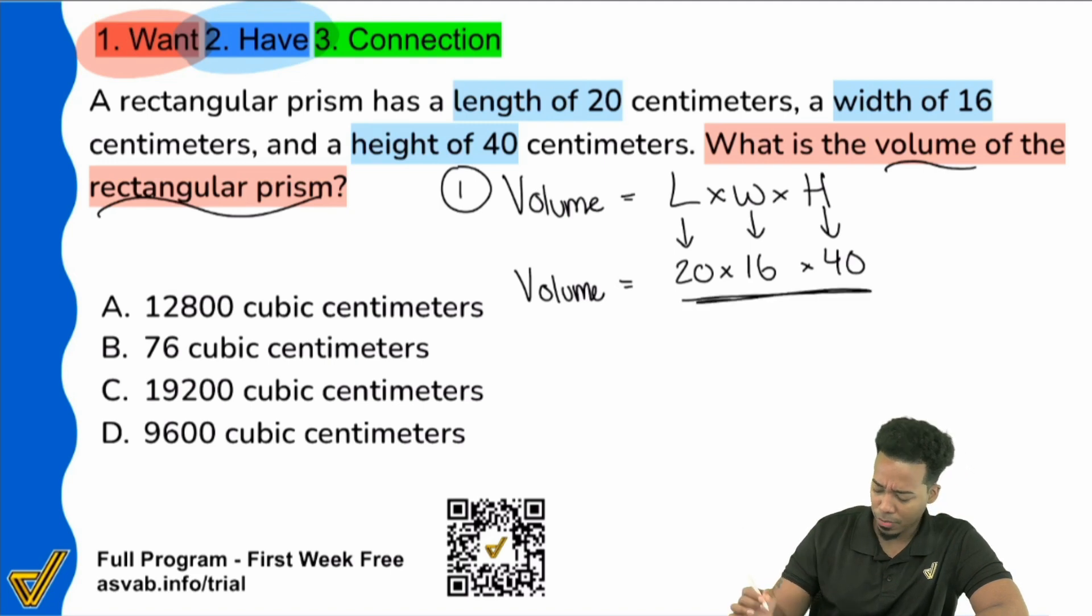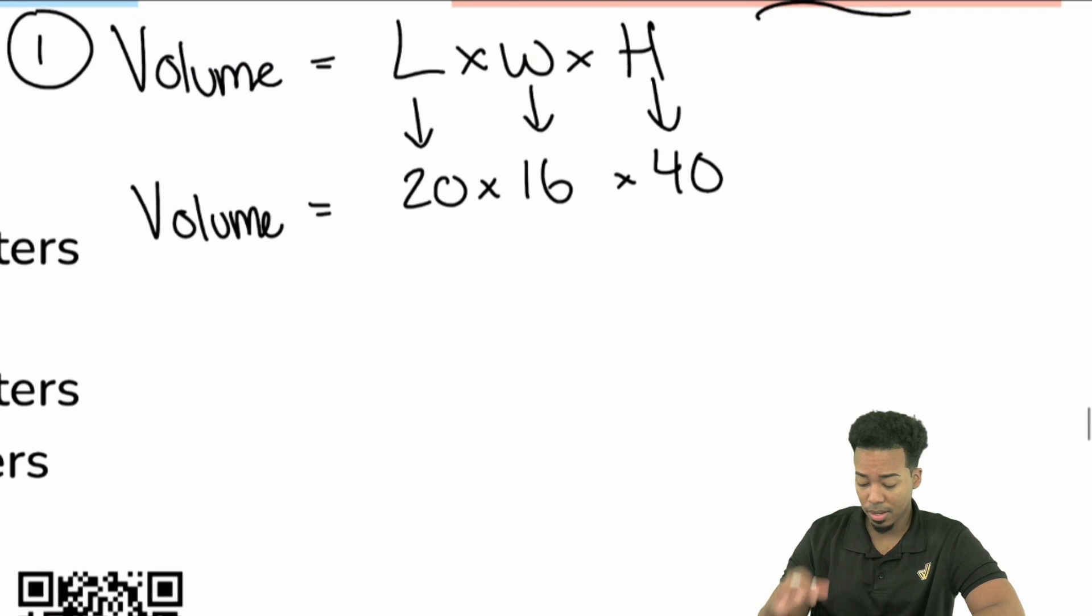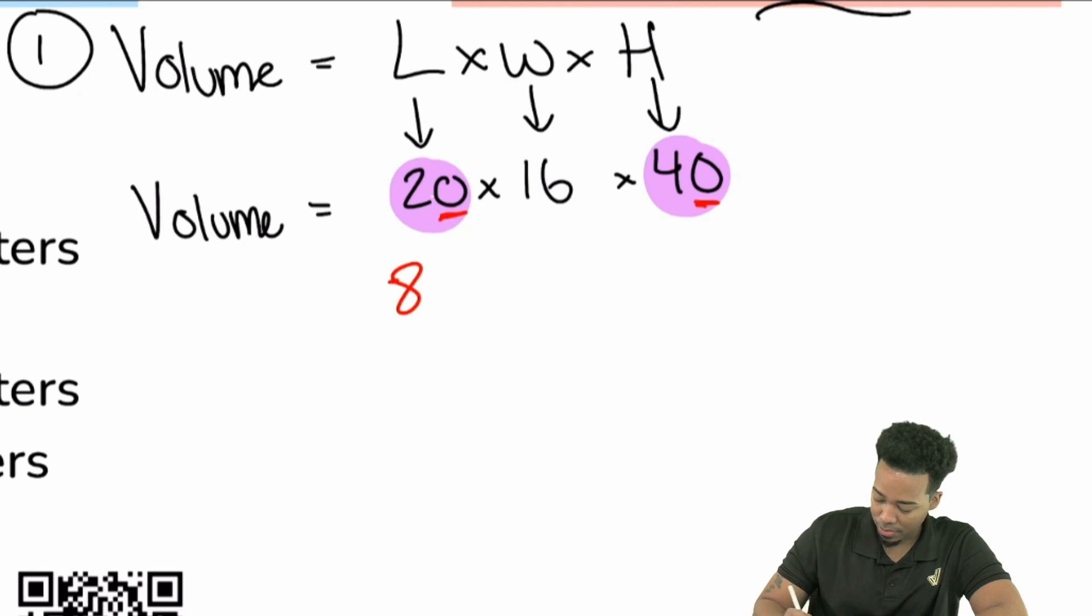So here we go. 20 times 16 times 40. The easiest way that I can think of to do this is going to be understanding that you can multiply in any order you want. So I'm going to start off by multiplying the 20 and the 40. The reason I'm doing that is because dealing with zeros at the end, it's going to keep things easy for me. So 20 times 40, 2 times 4 is going to be 8. And then we have 0, 0. So 800. Again, that's not terrible, right? Not terrible.